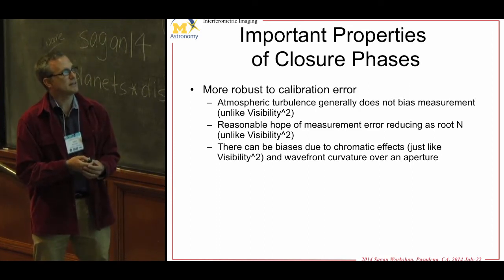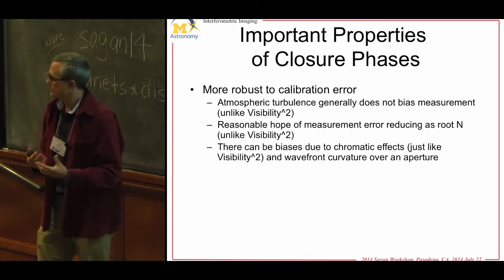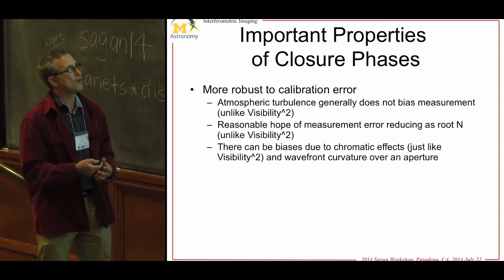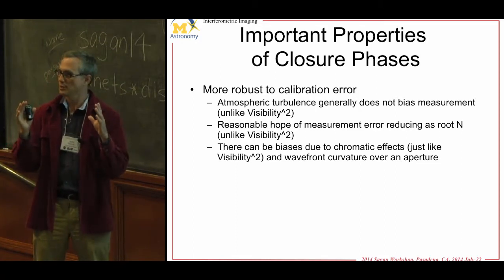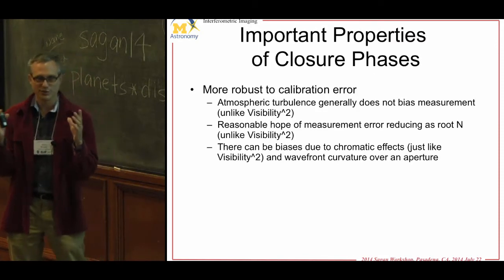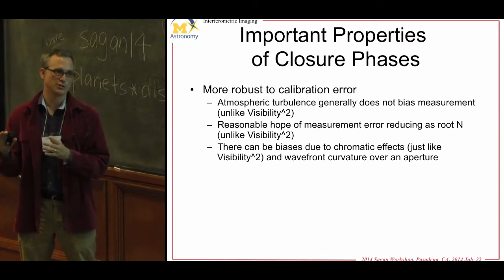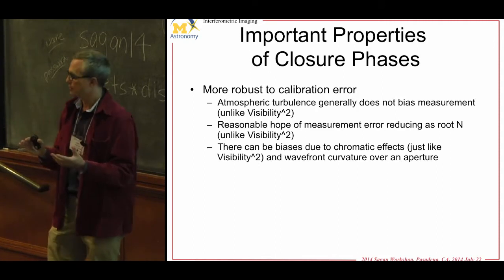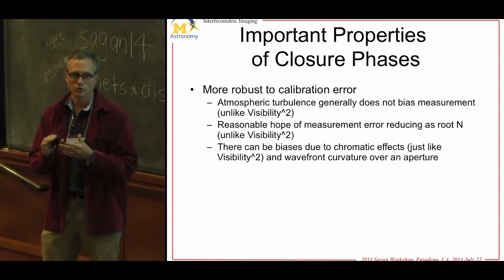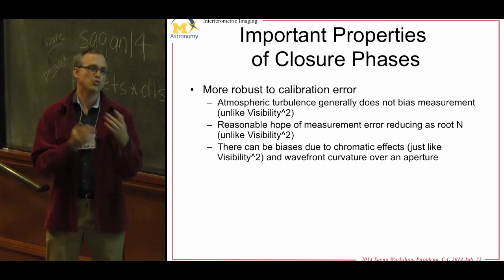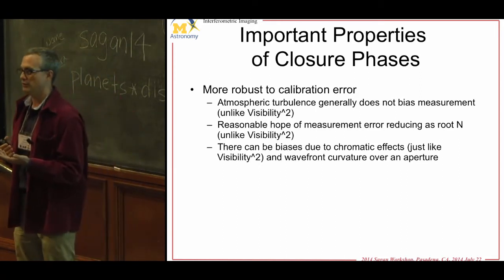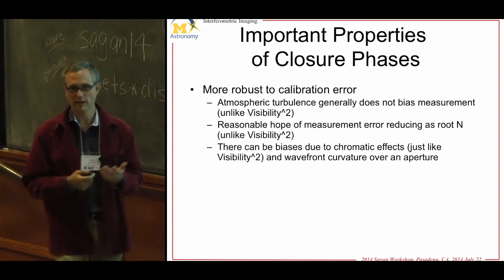But there are biases that can affect it. There's dispersion in a finite spectrograph and in your beam train. When you make your holes too big for more light, there will be residual systematic phase curvature — uncorrected modes in your adaptive optics or optical train. Those slight turns across an aperture will corrupt your closure phases and give you a baseline systematic. So it's not absolutely perfect.